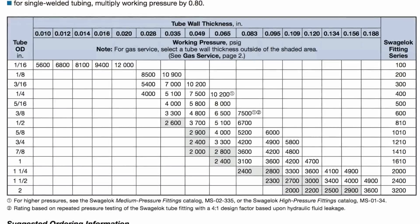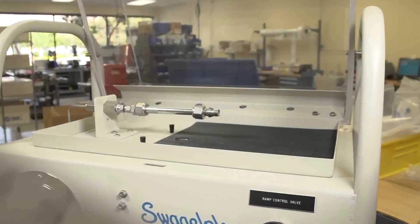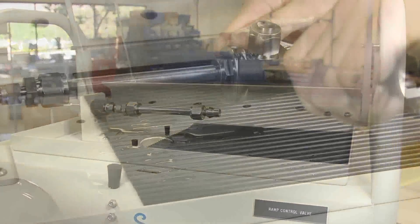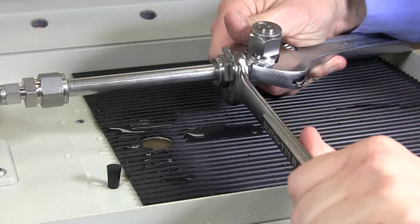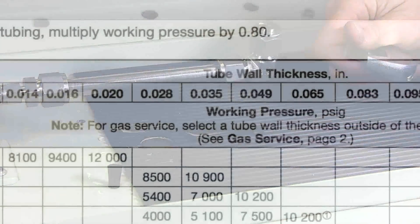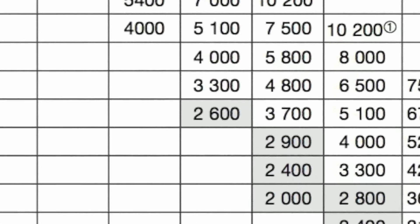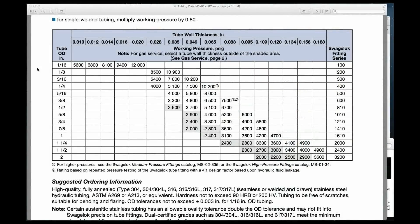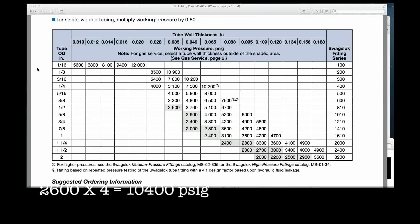Working pressure ratings that are shaded are for liquid service, not gas service. We will be bursting 316 stainless steel seamless tubing. The OD is half inch and the wall thickness is 0.035 inches. According to the tubing data table, it has a suggested allowable working pressure of 2600 PSIG in liquid service. Using the typical tubing safety design factor of 4 to 1, its estimated minimum burst pressure is 10,400 PSIG. Now that you know that important information, you are ready to guess — when will it burst?